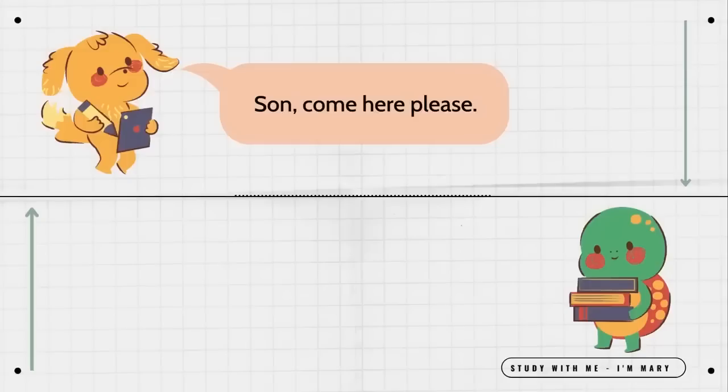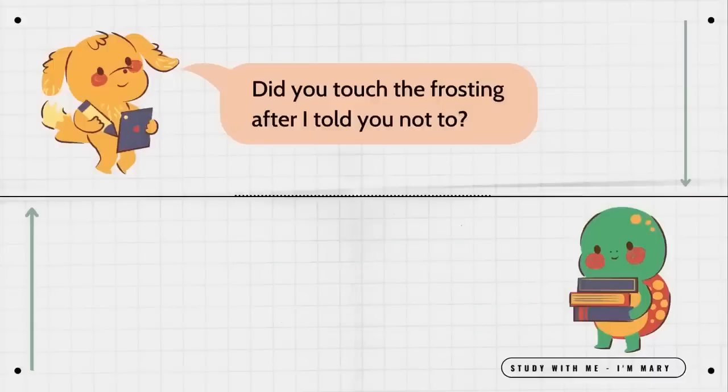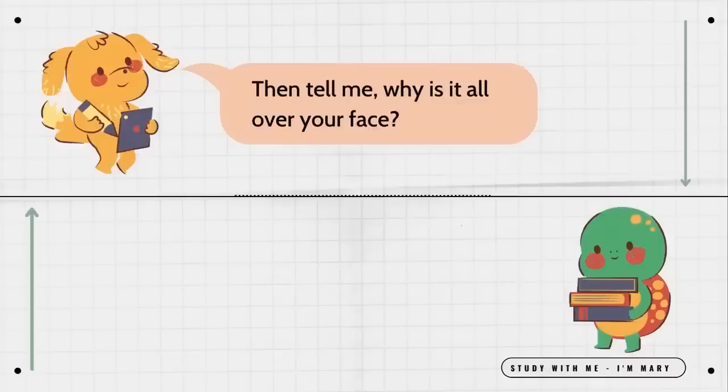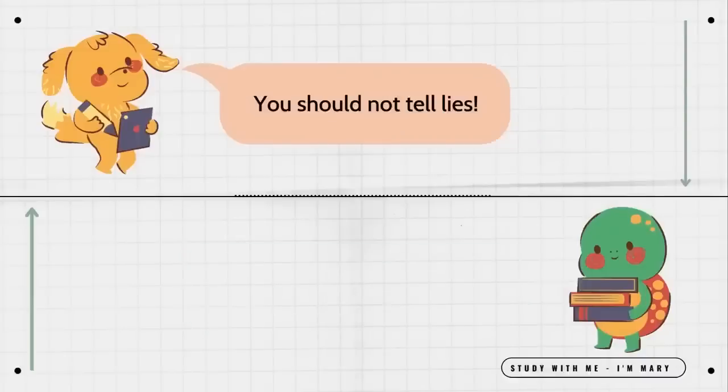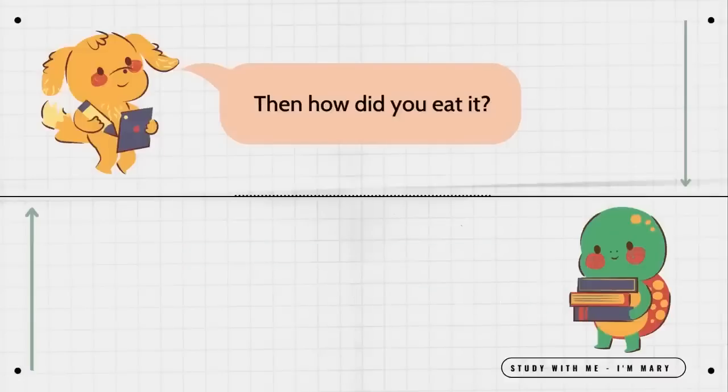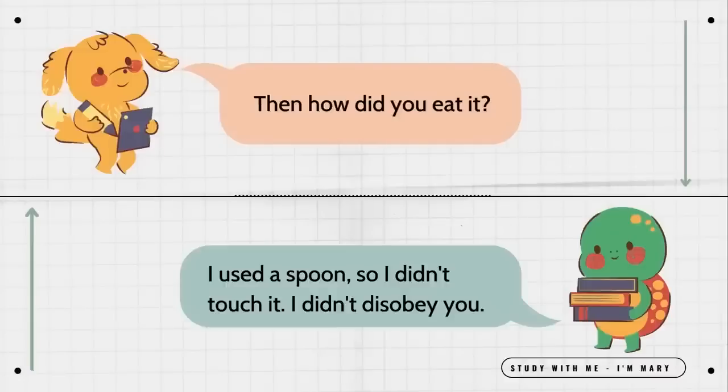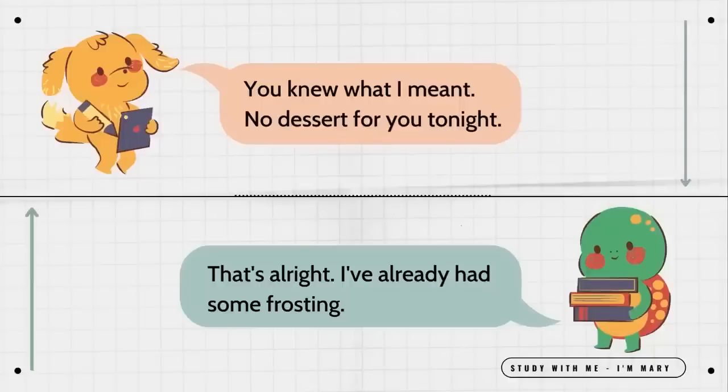Son, come here please. What is it, mother? Did you touch the frosting after I told you not to? No, I didn't touch the frosting. Then tell me. Why is it all over your face? I ate some, but I didn't touch it. You should not tell lies. I am not lying. My hands did not go near the frosting. Then how did you eat it? I used a spoon, so I didn't touch it. I didn't disobey you. You knew what I meant. No dessert for you tonight. That's all right. I've already had some frosting.